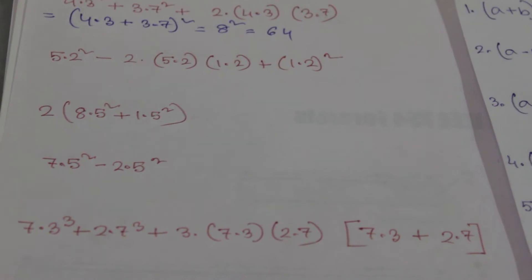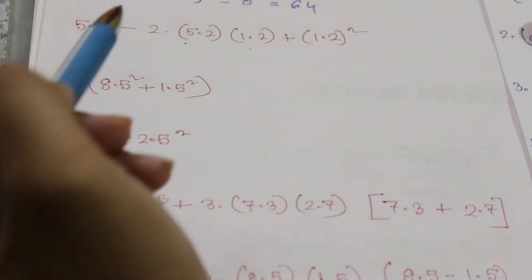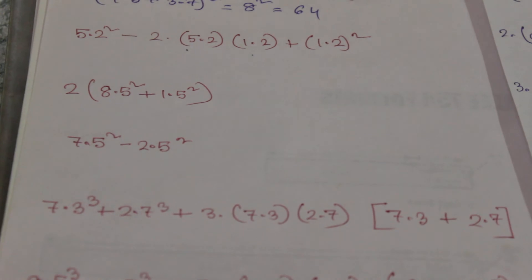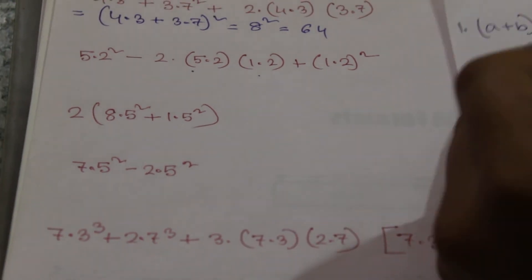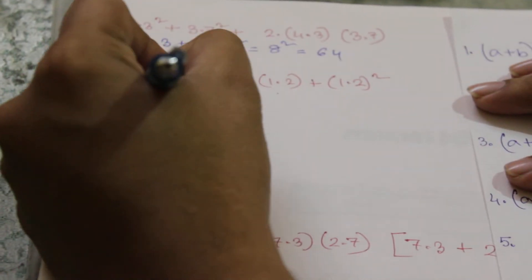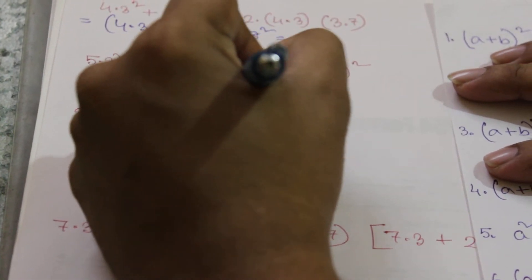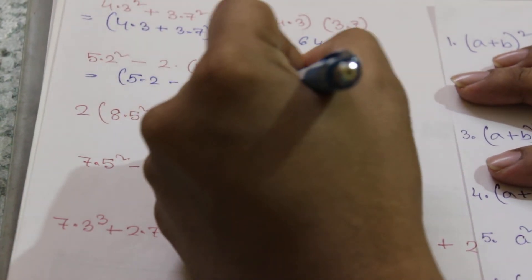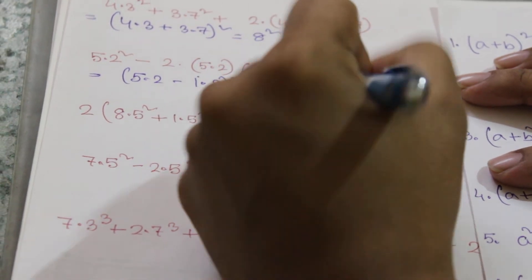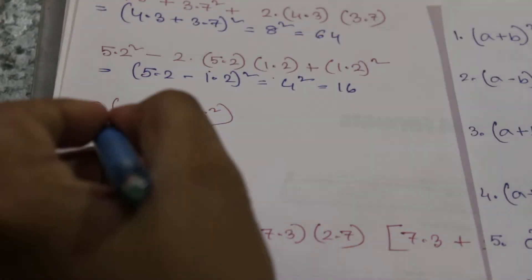The next one is 5.2 square minus 2 into 5.2 into 1.2 plus 1.2 whole square. We will use the second formula — a square minus 2ab plus b square — which equals (a - b) whole square. So (5.2 - 1.2) whole square equals 4 square, and the result is 16.